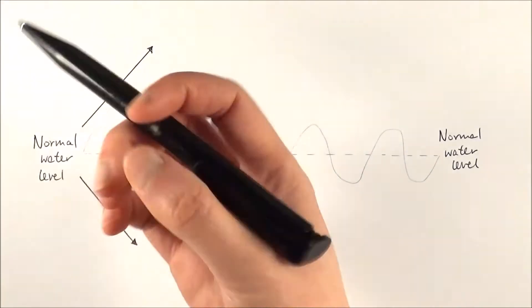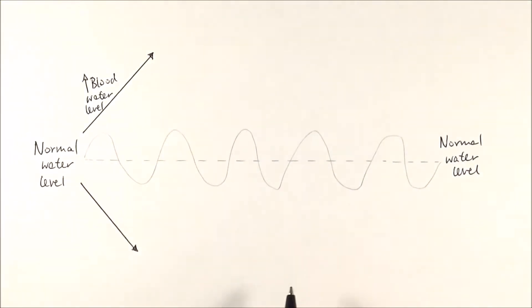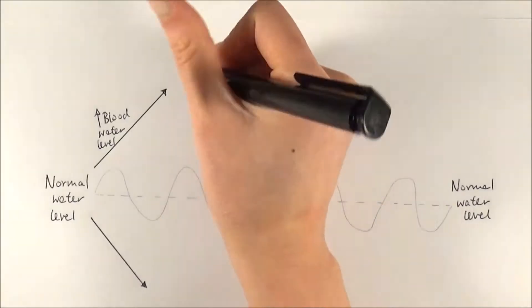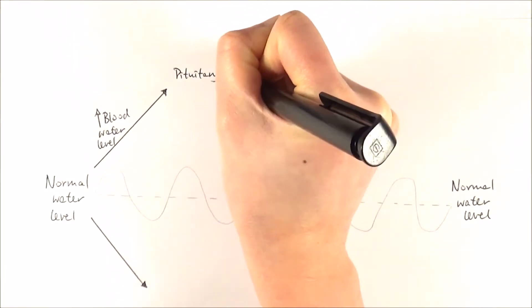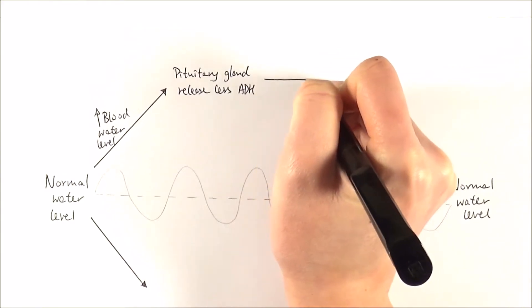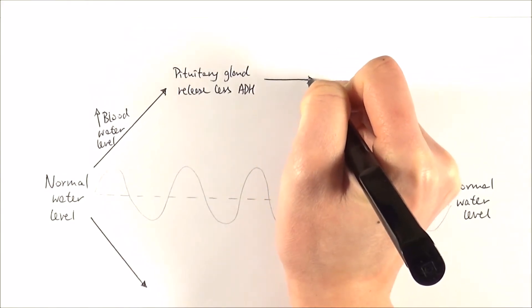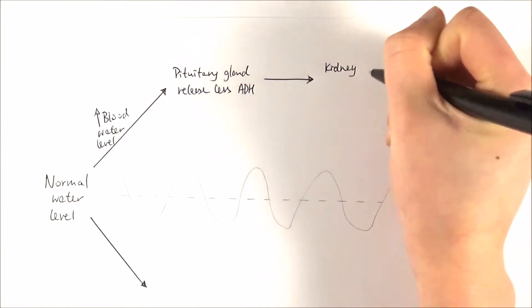Let's say in this case we'll consider if there is too much water in the blood. What happens is it will be detected by osmoregulators. It sends a signal to the pituitary gland in the brain and the pituitary gland will then release less ADH. The ADH will travel via the bloodstream to the kidney and it tells the kidney to reabsorb less of the water.